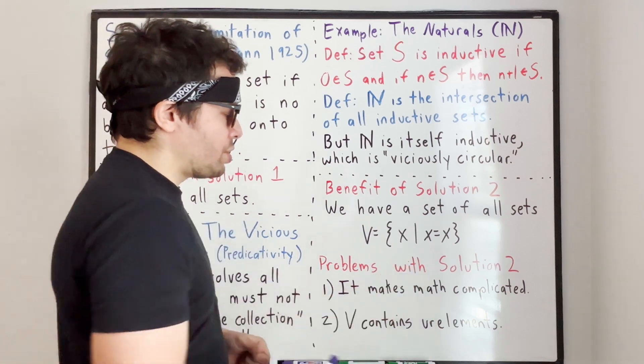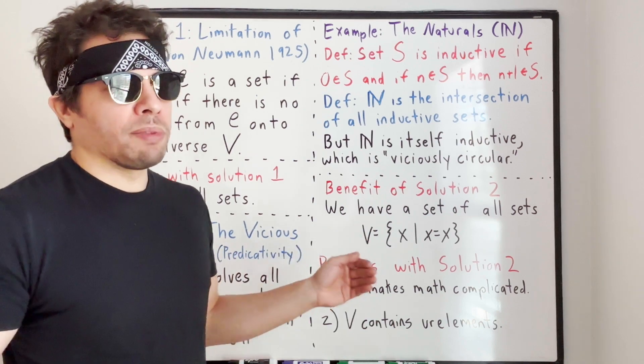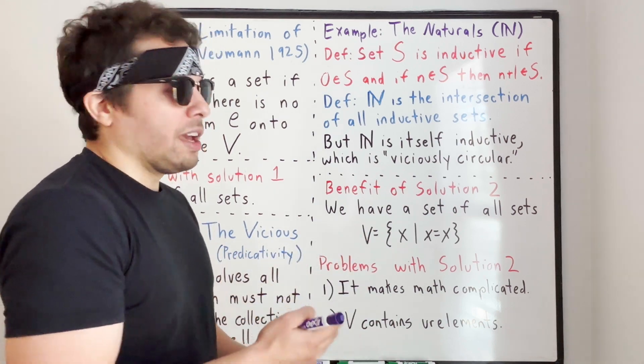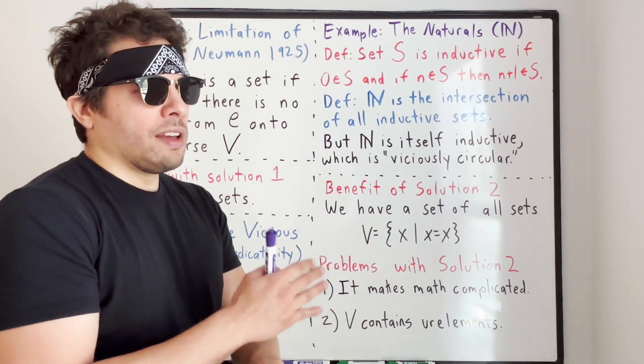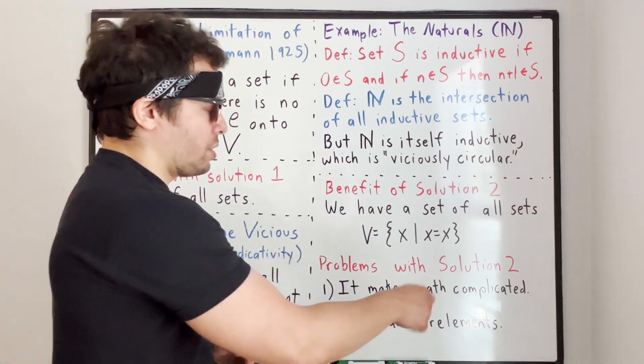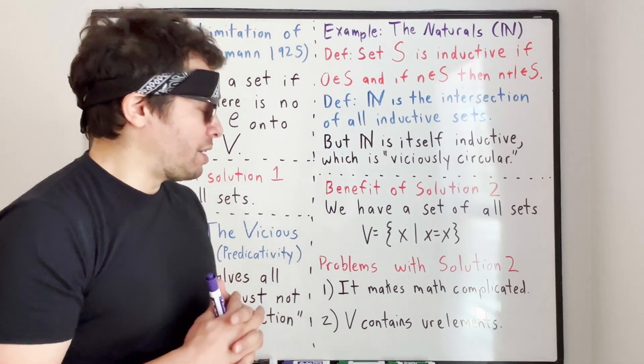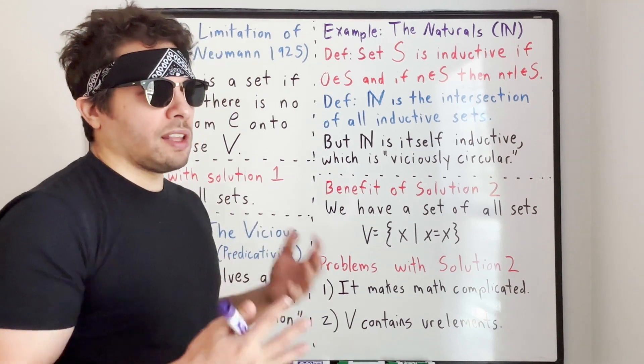However, in Solution 2, on the base level, you have many different objects, and none of them contain any other elements, and they're all distinct. So you have distinct atoms, each of which contains no elements, and those are called urelements. And for philosophical reasons, people might find that undesirable. Also, it makes things kind of clunky.